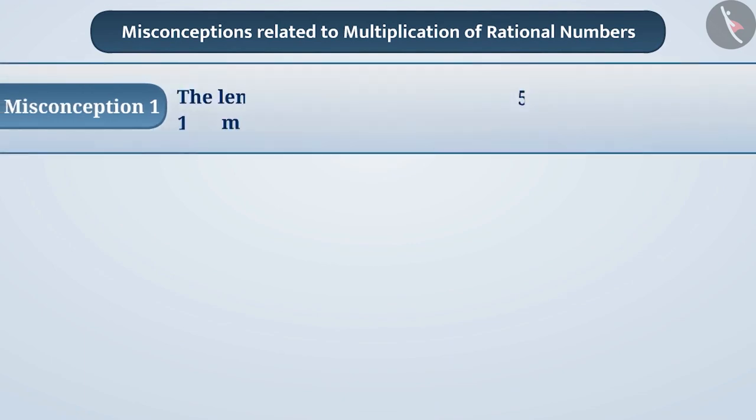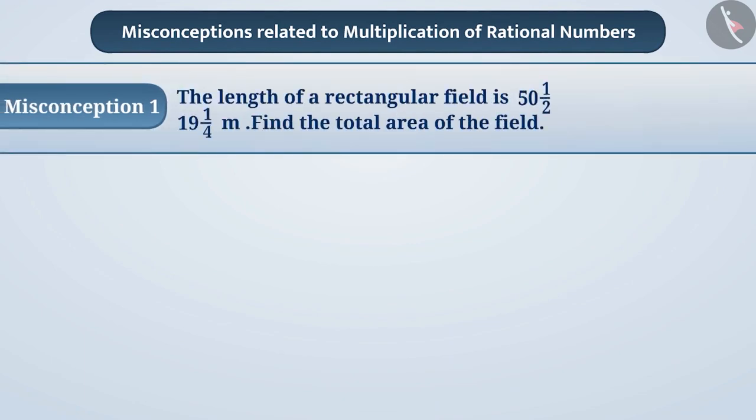Misconception 1. The length of a rectangular field is 50½ meters and the breadth is 19¼ meters. Find the total area of the field.